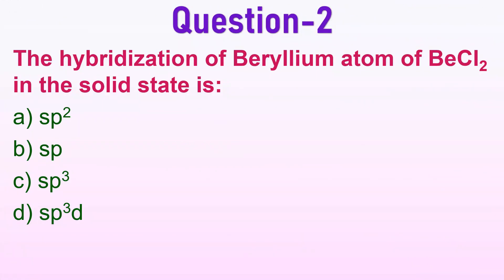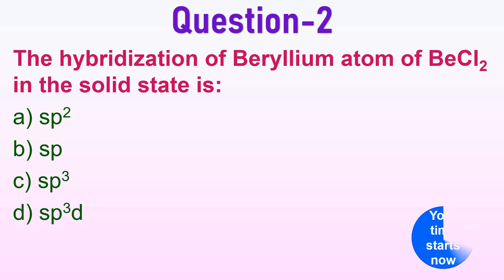The second question: 'The hybridization of the beryllium atom of beryllium chloride in the solid state is:' Option A — SP2. Option B — SP. Option C — SP3. Option D — SP3D. In the solid state, beryllium chloride exists as a linear bridged polymer and the beryllium atom forms four bonds. Hence, its hybridization is SP3. The correct option is C.